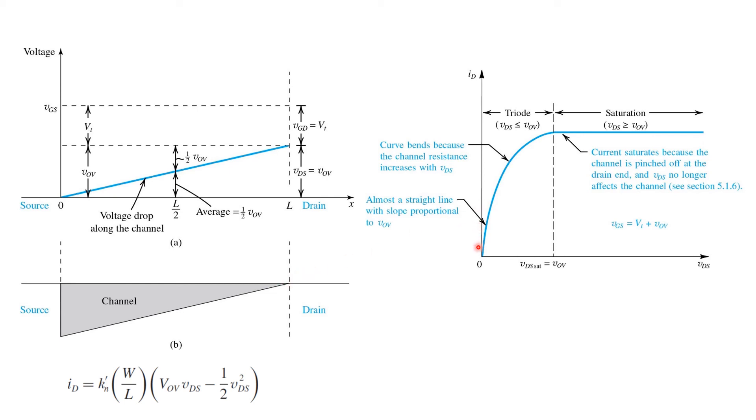Now an interesting thing happens as you increase VDS beyond this point. The current doesn't start to decline, instead it stays constant, or roughly constant anyway, at the value obtained at this saturation point.